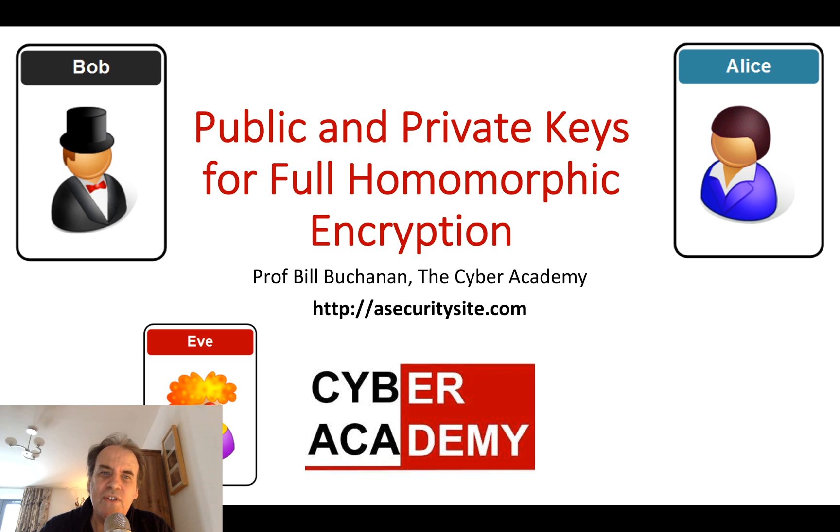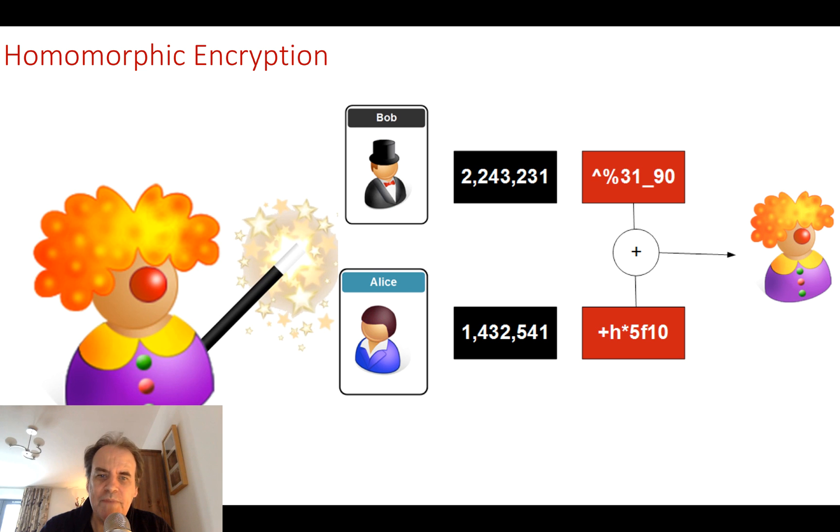Okay, so let's look at the generation of a public and private key for full homomorphic encryption. Homomorphic encryption is where we want to operate on values but still keep them secret.